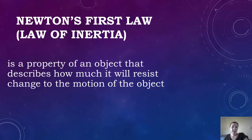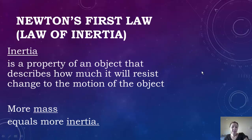The law of inertia, what exactly is inertia? So inertia can be described as a property of an object that describes how much it will resist change to the motion of the object. So basically, it's how much it will resist change. If you have more mass, then you're going to have more inertia.